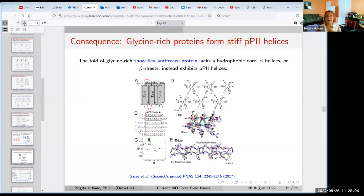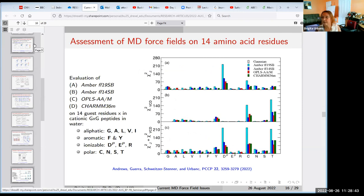Our conclusion is that glycine-rich proteins are stiff because they form PP2 helices. It just happens that Czajka's group in 2017 reported the three-dimensional folded structure of glycine-rich snow flea antifreeze protein that lacks any hydrophobic or alpha helices or beta sheets, but instead it exhibits PP2 helices, and it formed perfectly stiff three-dimensional native structure. So this goes along with our discoveries. But let's go back to the assessment of molecular dynamics forces.